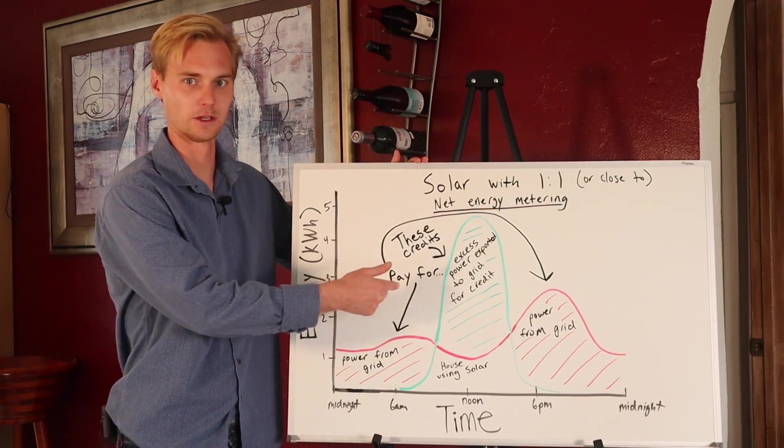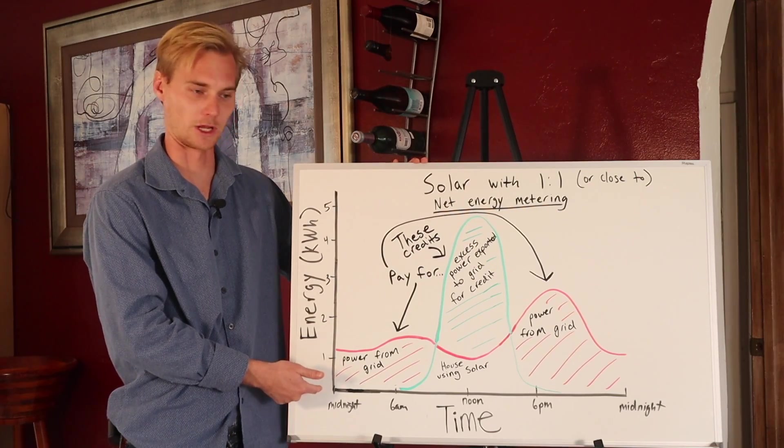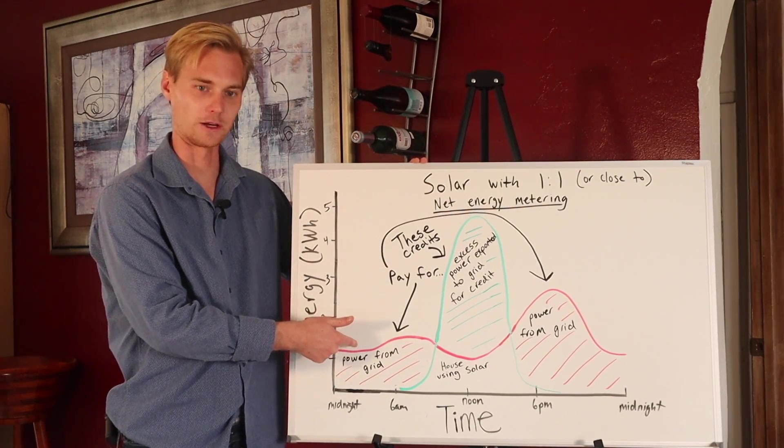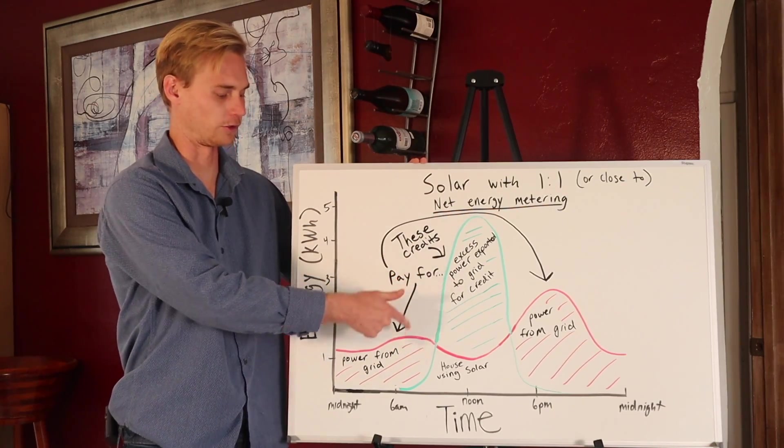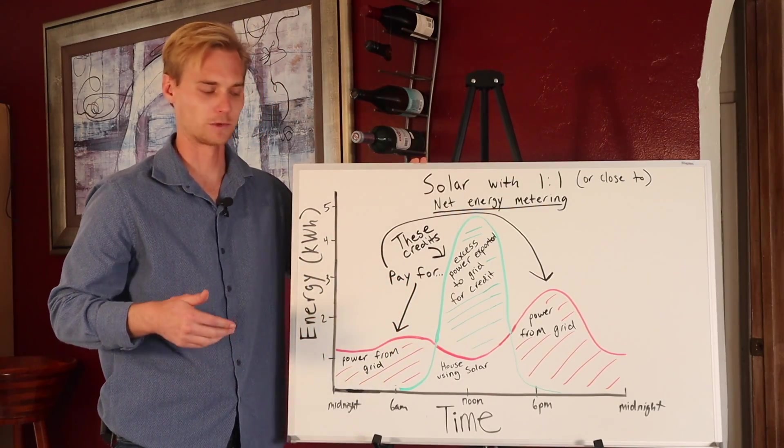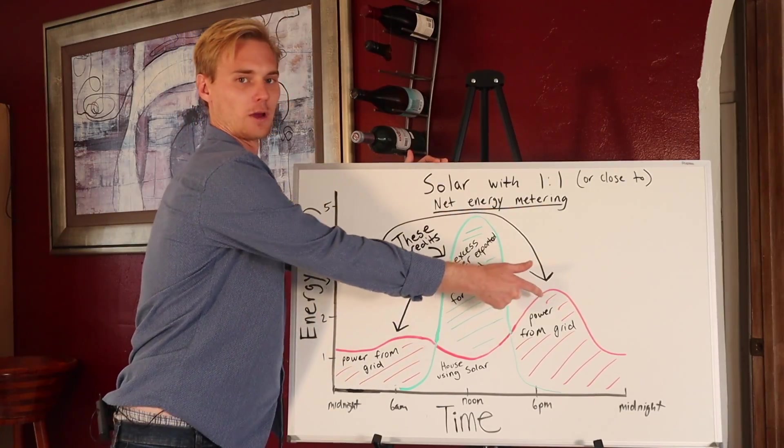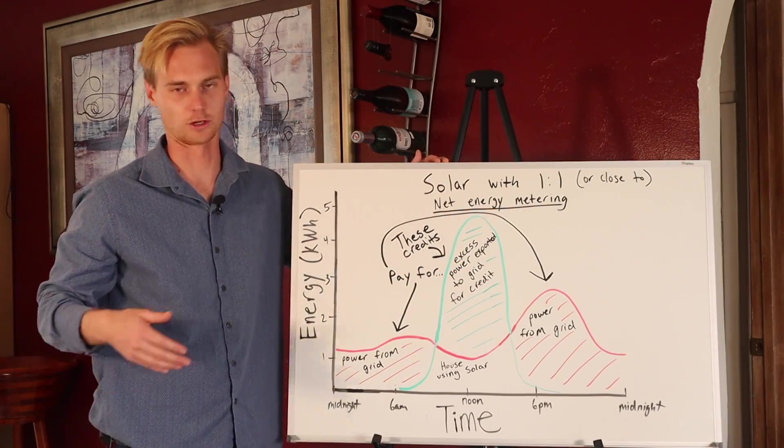So basically the red line is a home's usage throughout the day, so it starts at midnight, ends at midnight. You use a little bit of power throughout the night. People wake up, they're cooking breakfast, they have their lights on, they're using the bathroom and everything, then usually there's a dip. People go to work, people aren't really in the house as much, and then in the evening time, people come back, they're cooking dinner, kids are back from school, etc., right?